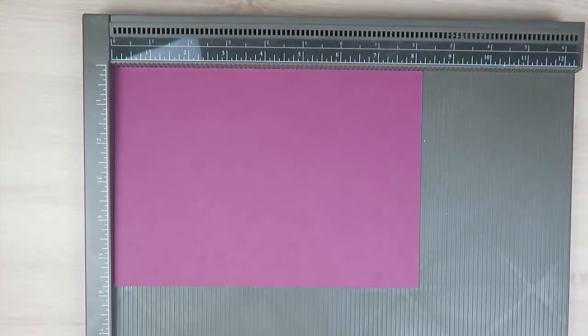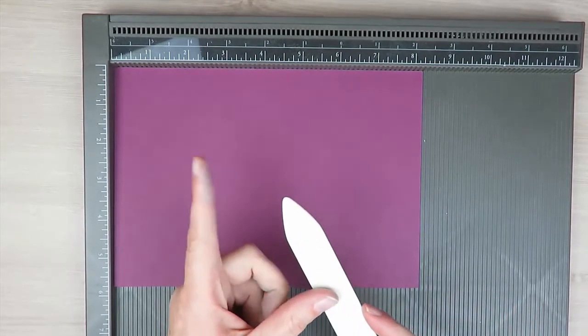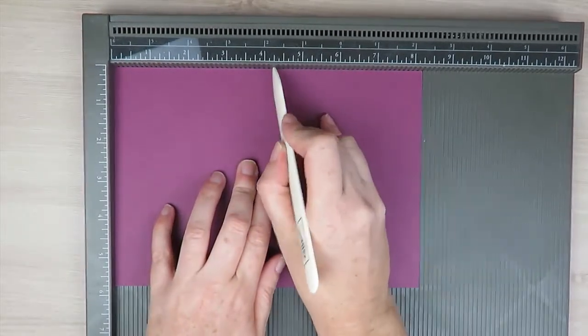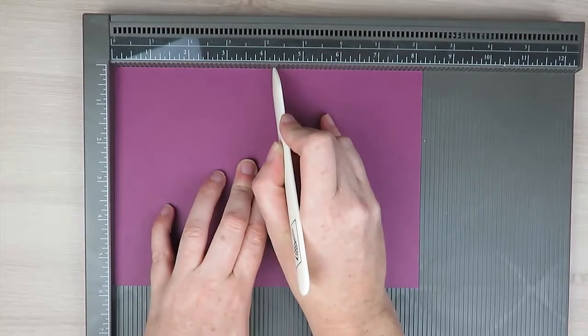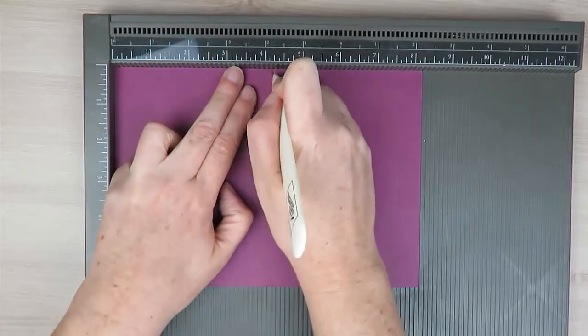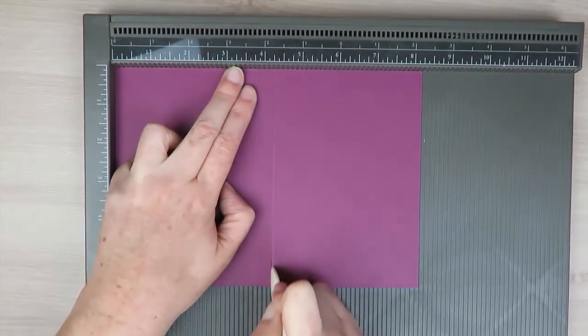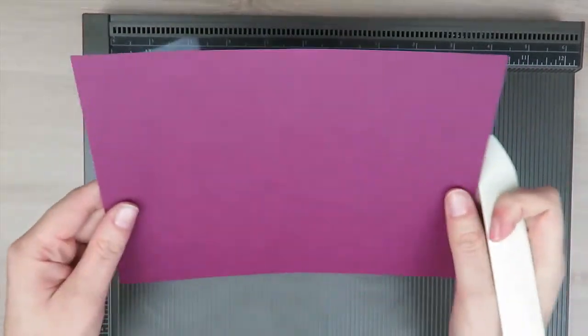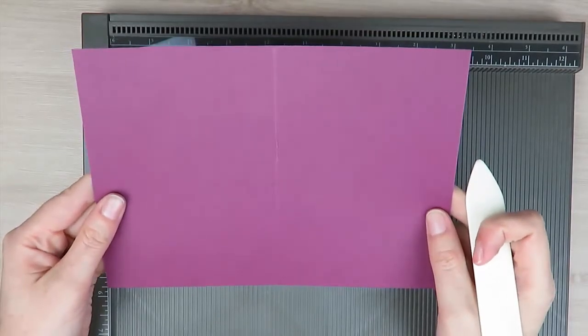Believe it or not, you can also use your bone folder with your Simply Score tool. Now instead of using your stylus, if you happen to misplace your stylus and can't find where you misplaced it, you can use the tip of your bone folder in your scoring tool as well. So you want to line up in the little groove that matches as to where you want your score line, and then you're just going to drag it along that groove on your Simply Score board. And again you'll get that nice score mark there as well.